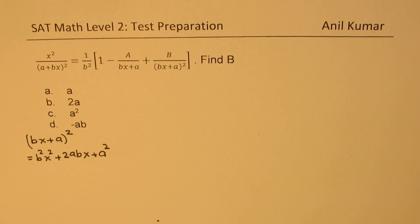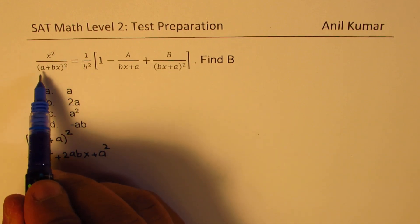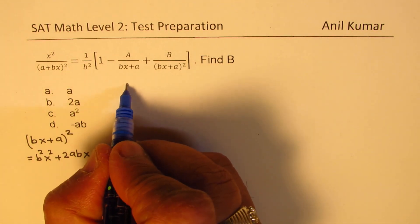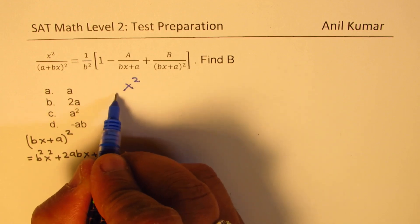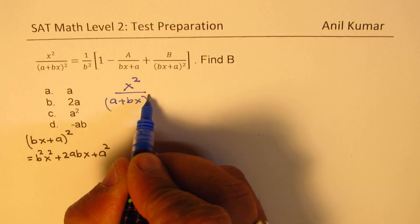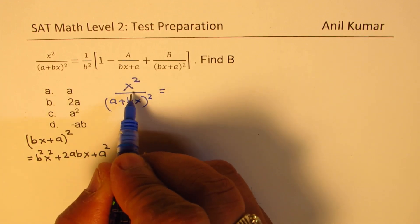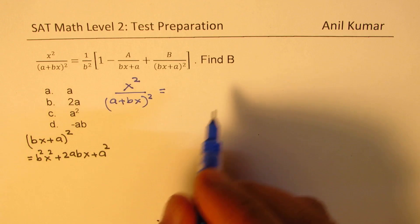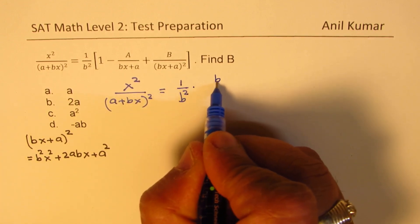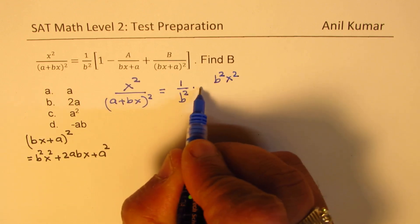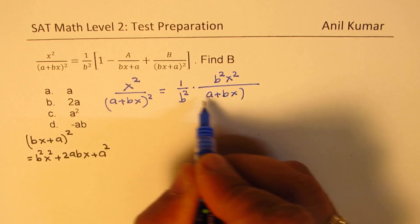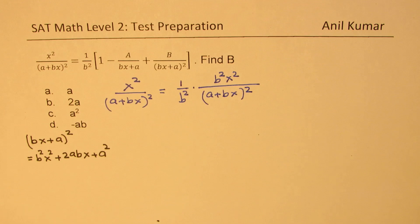Since we need to write x squared over (a plus bx) whole squared as 1 over b squared times something, the first step is to multiply and divide by b squared. So we have 1 over b squared times b squared x squared over (a plus bx) whole squared.